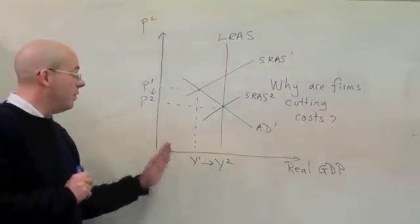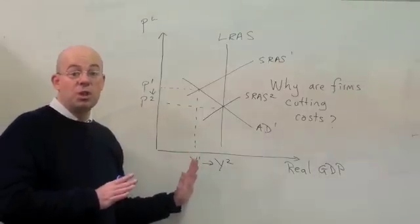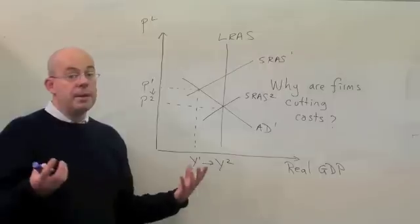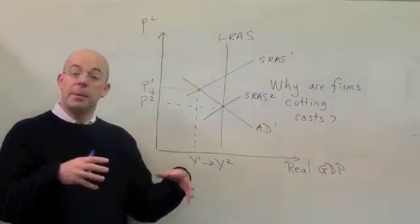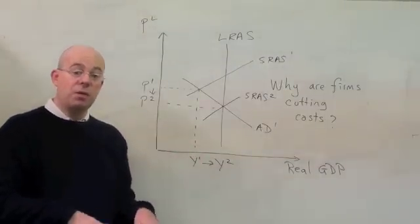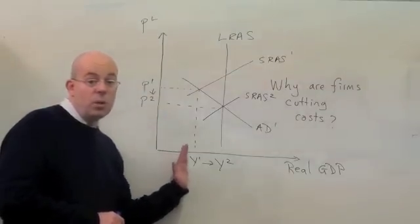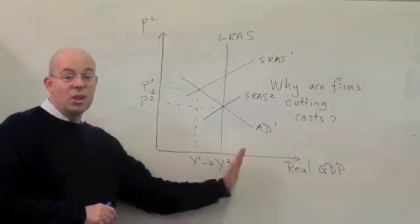In addition, firms might say now we're in a position to be able to expand. We have cheaper labor. Maybe more companies will start up, maybe companies will relocate to Britain with those lower costs of production. So again, we'd see this movement from Y1 to Y2, thus the economy expanding.